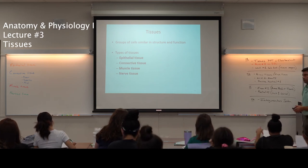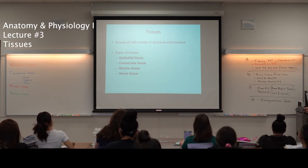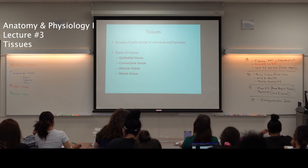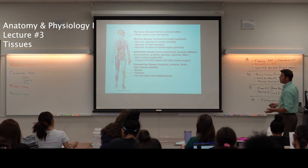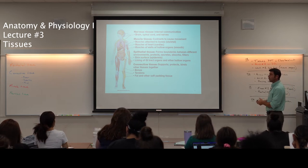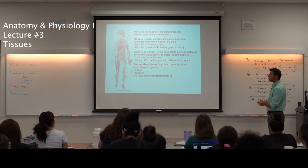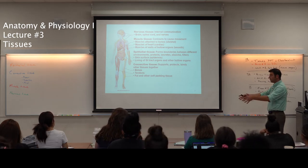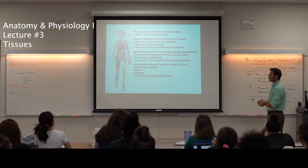With that we can jump into our PowerPoint slides. We've got the four tissue types listed. Here is a quick representation of where you find those. Nervous tissue sends rapid electrical impulses — the brain, the spinal cord, and nerves throughout the body are comprised of nervous tissue.